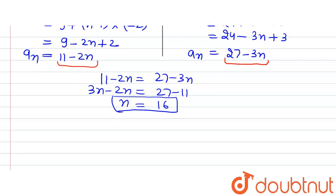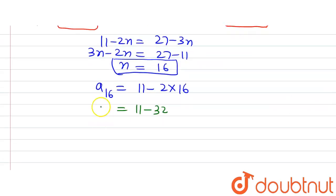The 16th term is a₁₆ = 11 - 2 × 16 = 11 - 32 = -21. So that term is -21.